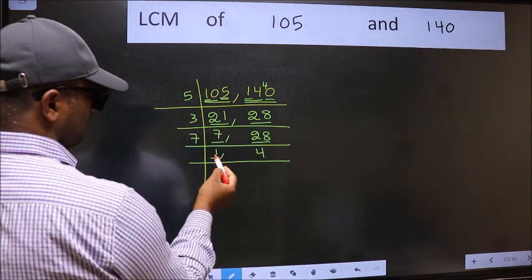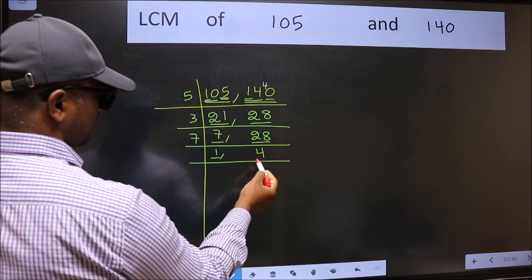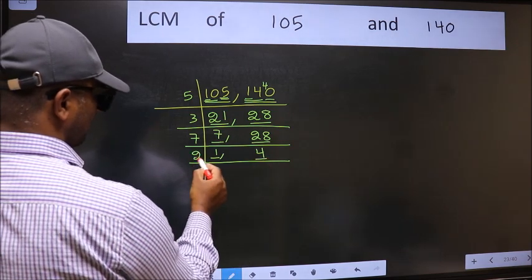Now we got 1 here. So focus on the next number 4. 4 is 2 times 2 is 4.